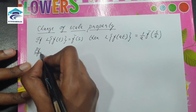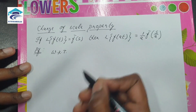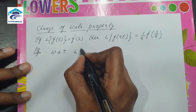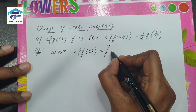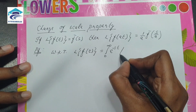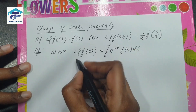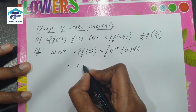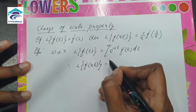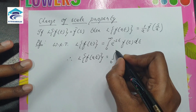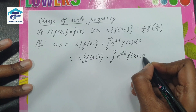Let us prove this. We know that the Laplace transform formula is L of f(t) is equal to the integral from 0 to infinity of e to the power minus st times f(t) dt. So what we need here is L of f(at), which equals the integral from 0 to infinity of e to the power minus st times f(at) dt.